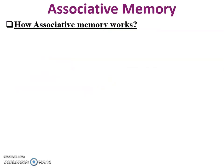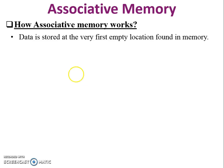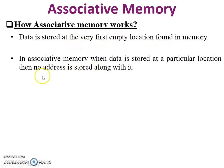Working of associative memory — some steps are given here. First, the data storage process: data is stored at the very first empty location found in memory. In associative memory, when data is stored at a particular location, no address is stored along with it, because data is searched by data content in place of address.